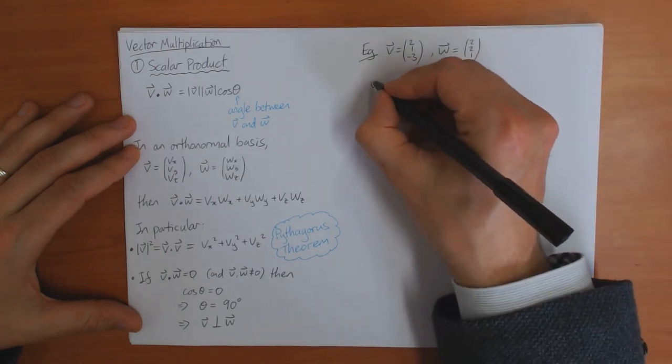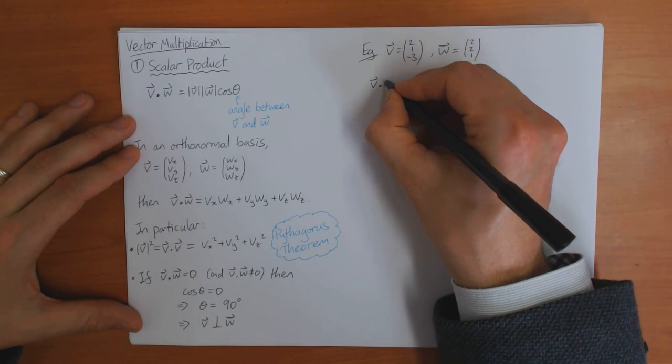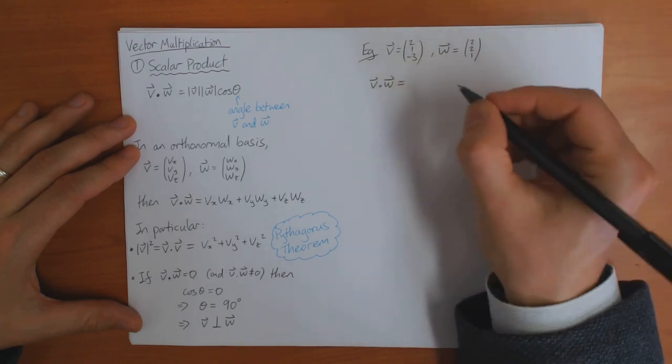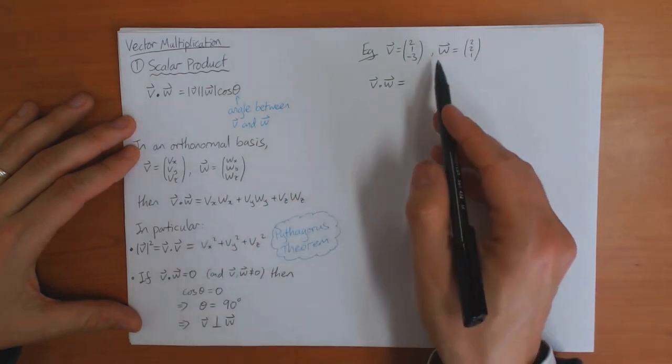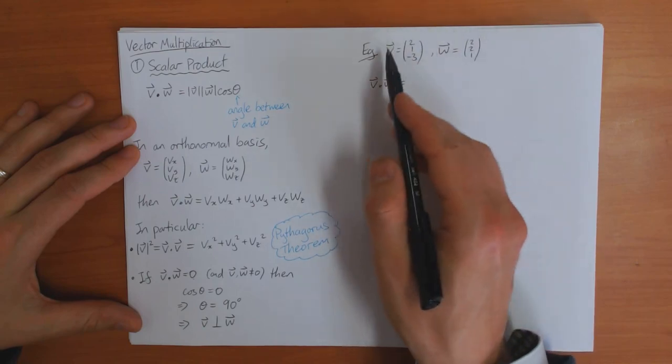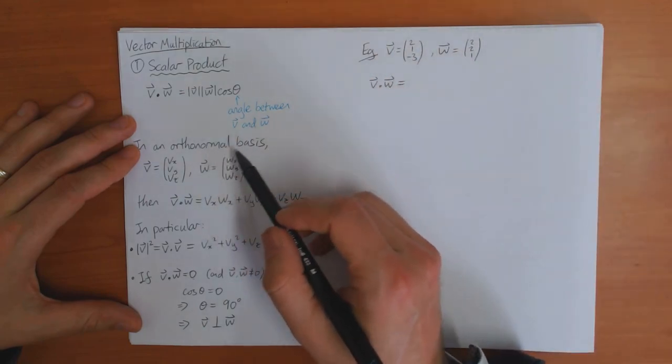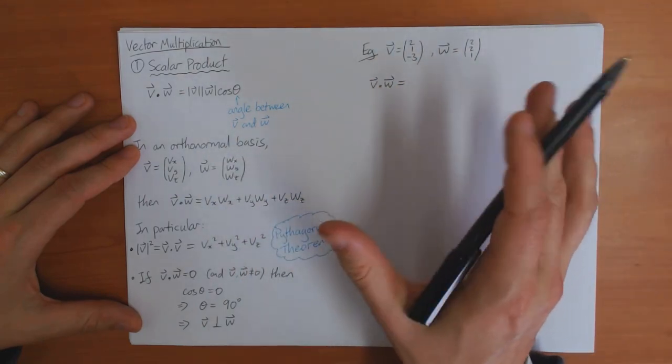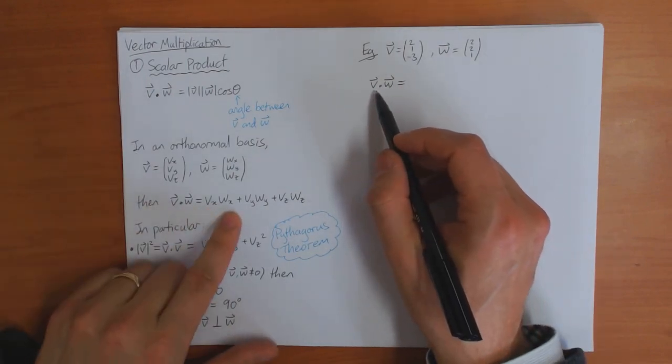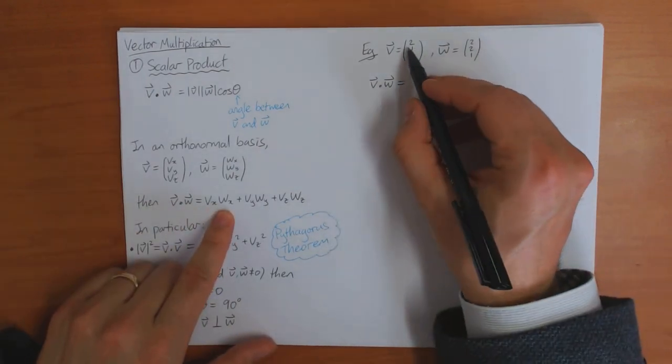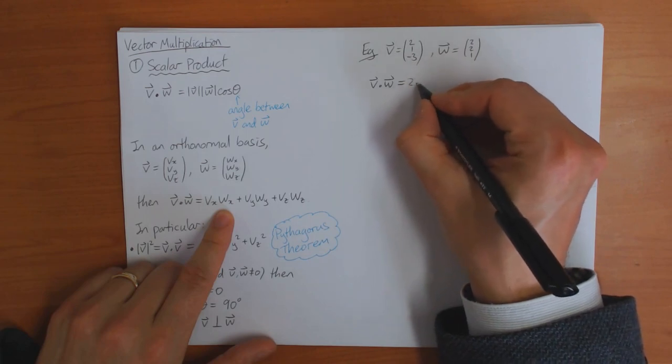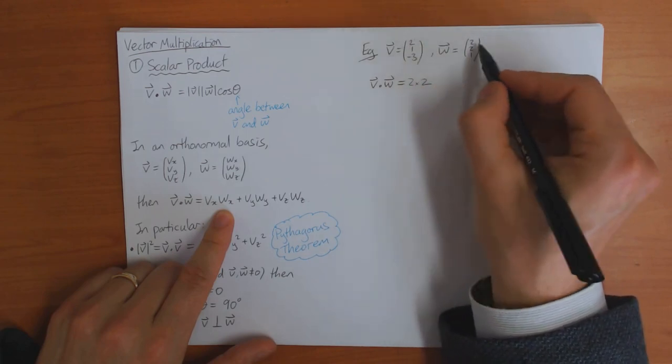Then v dot w, from here, assuming we're using an orthonormal basis. In physics, we always assume we use an orthonormal basis, nearly always. So then we can use this formula, and the dot product is going to be the x components. So that's two times two, that's that times that.